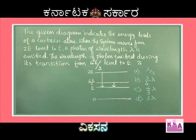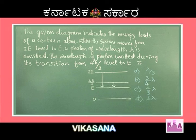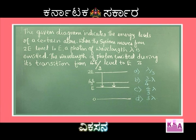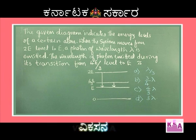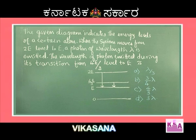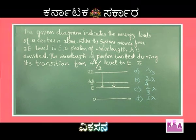Next question: the given diagram indicates the energy levels of a certain atom. When the system moves from the 2E level to E, a photon of wavelength λ is emitted. What is the wavelength of the photon emitted during the transition from the 4E/3 level to E?